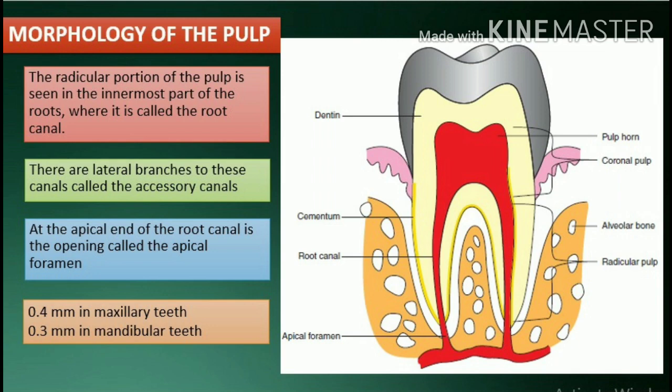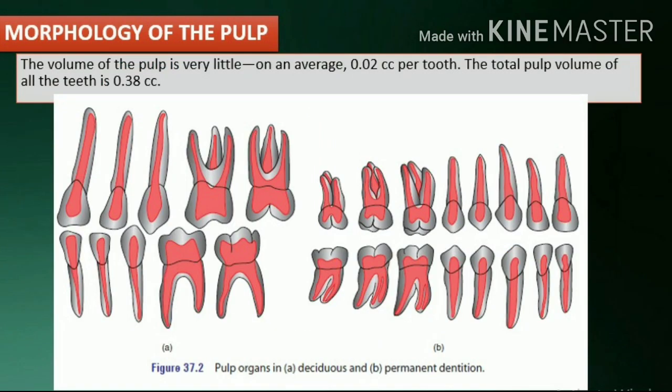The average size of the apical foramen of maxillary teeth is 0.4 mm and mandibular teeth is 0.3 mm. The volume of the pulp is very little — on average, 0.02 cubic centimeters per tooth. The total pulp volume of all the teeth is 0.38 cc.